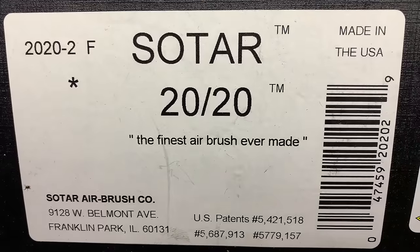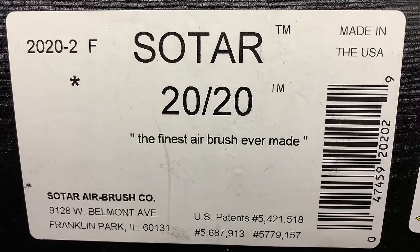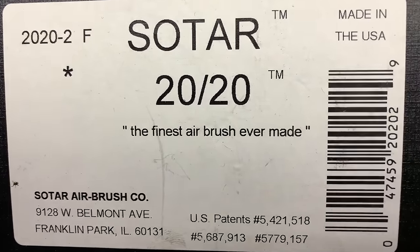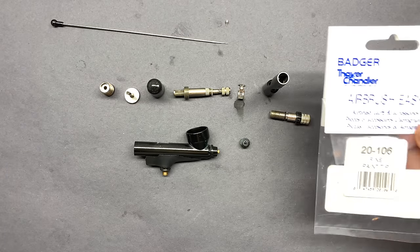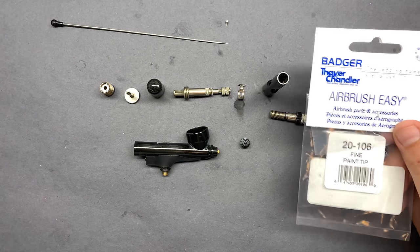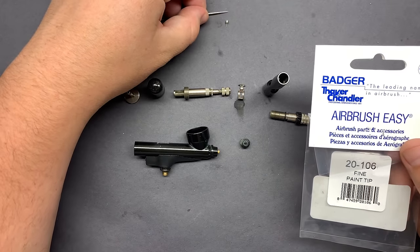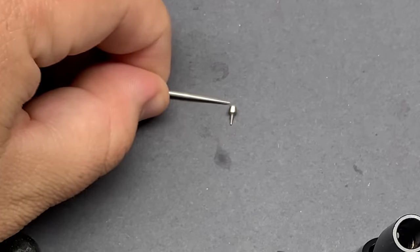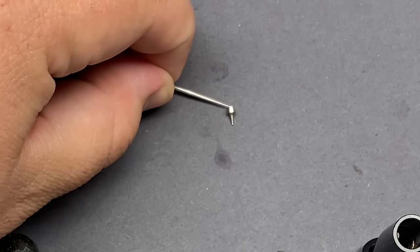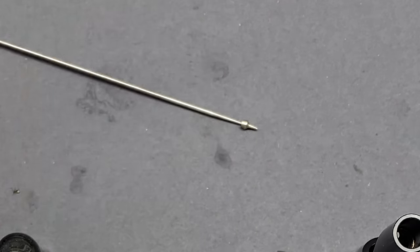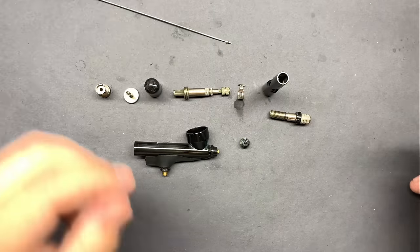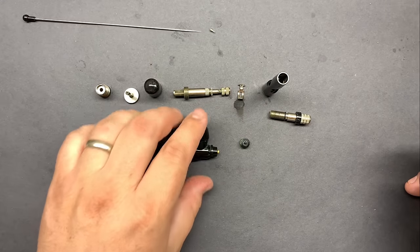What's up guys and welcome back to another miniature rescue. Today we're going to talk about the Sotar 2020 airbrush and my thoughts about it so far. I picked up this 20-20F for $115 on Amazon and it comes with a fine tipped needle, I think that's like a 0.2 or 0.25 millimeter, so it's pretty small.